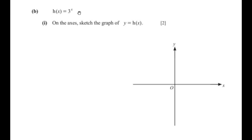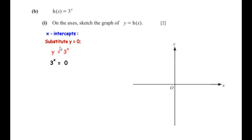h(x) equals 3 to the power of x. Sketch the graph of y equals h(x). To find the x-intercepts, substitute y equals 0, giving 3 to the power of x equals 0. There is no value of x for which 3 to any power equals 0, so there are no x-intercepts — the graph never cuts the x-axis.